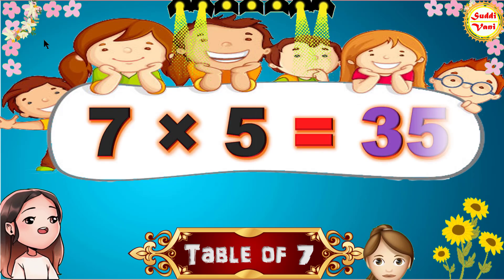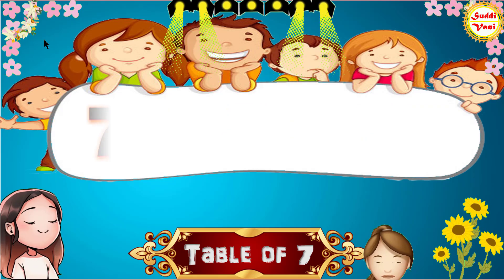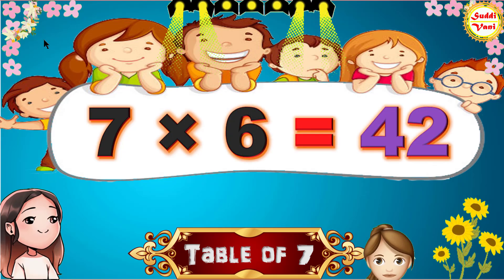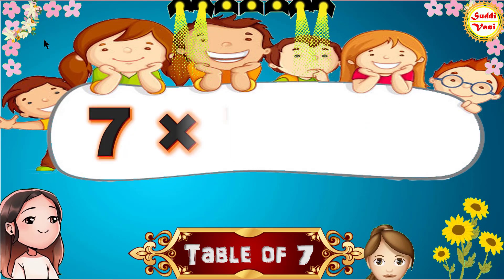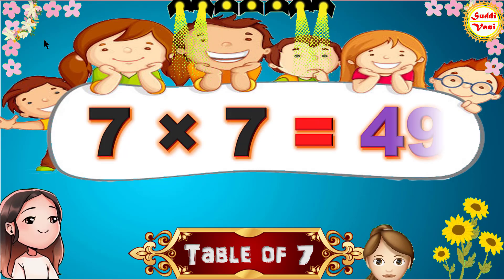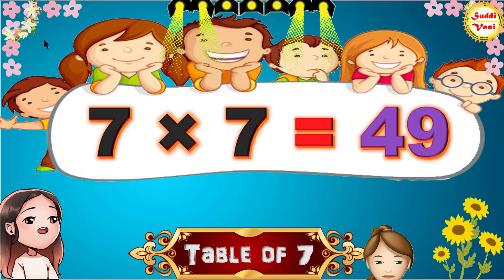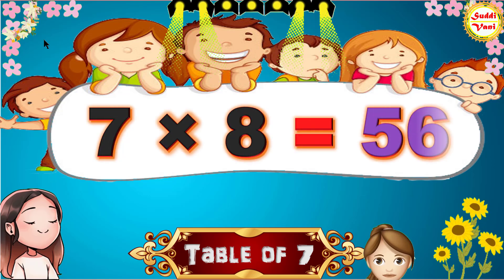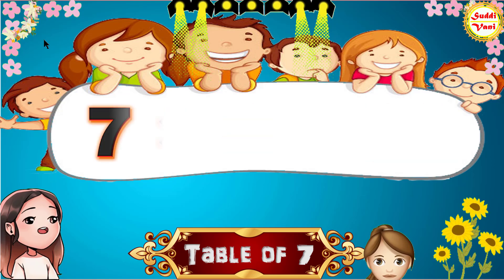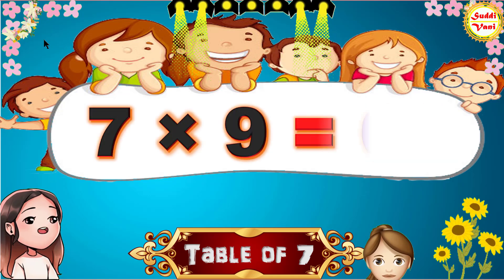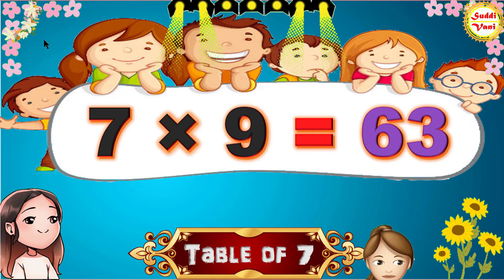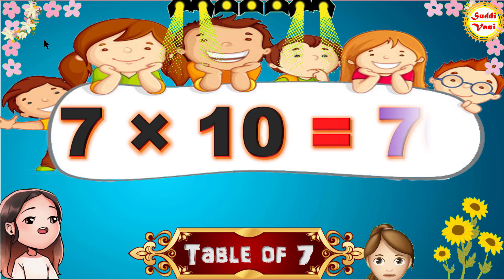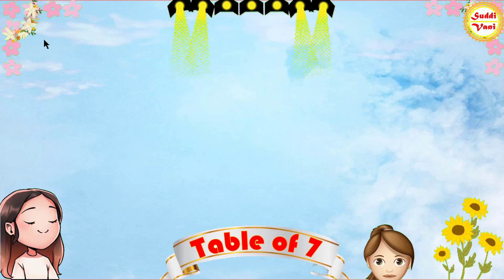7 5s are 35, 7 6s are 42, 7 7s are 49, 7 8s are 56, 7 9s are 63, 7 10s are 70.